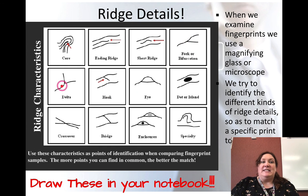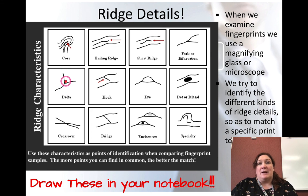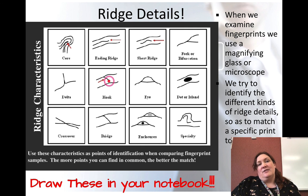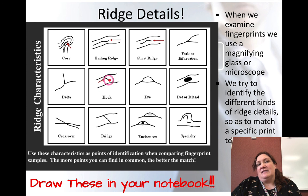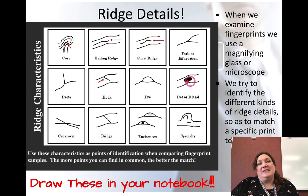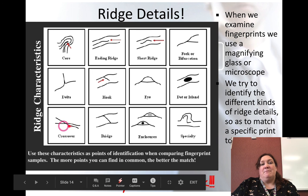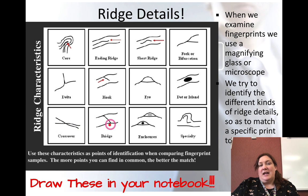A delta is where ridges come together and form one — they look more like they're converging than splitting apart. A hook is when you have a line going in the opposite direction from the general print. An eye — also called a dot or island — is a little circle in the middle of a ridge.